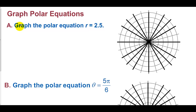Graph polar equations. Graph the polar equation r = 2.5. That is just a circle with a radius of 2.5. We go to 2.5 and draw the circle. That is a circle with a radius of 2 and a half.